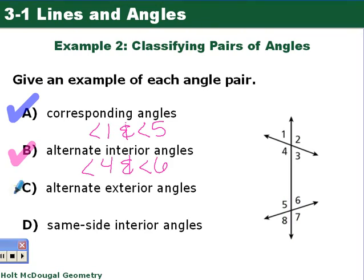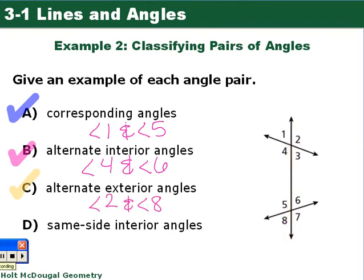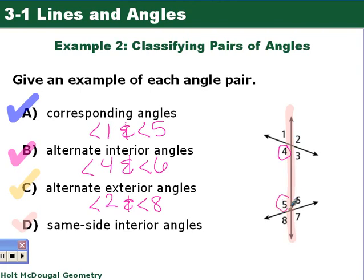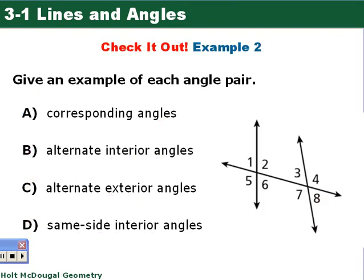For alternate exterior angles, we're looking at angles 1, 2, 7, or 8. Picking angle 2 — that's exterior — we alternate to the other side of the transversal, giving angle 8. For same side interior angles, angles 3, 4, 5, and 6 are all interior. Same side as angle 4 on the transversal would be angle 5. Now try this example yourself — find a pair of corresponding, alternate interior, alternate exterior, and same side interior angles. Put it into your notes, and use your angle markers when writing angles.